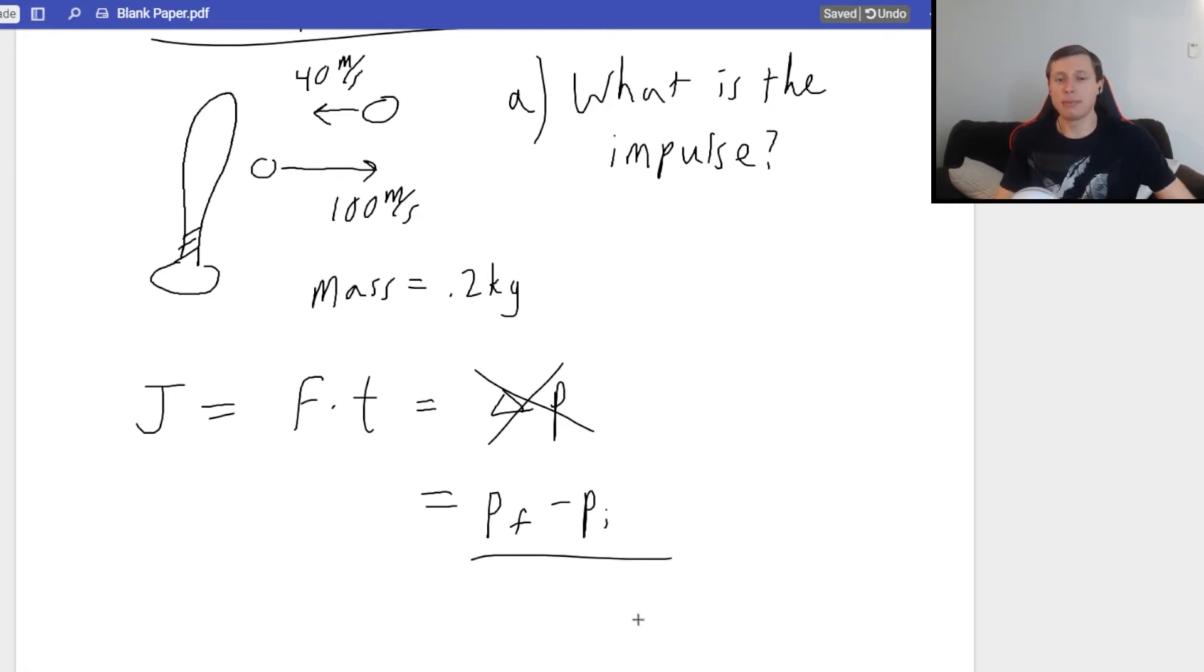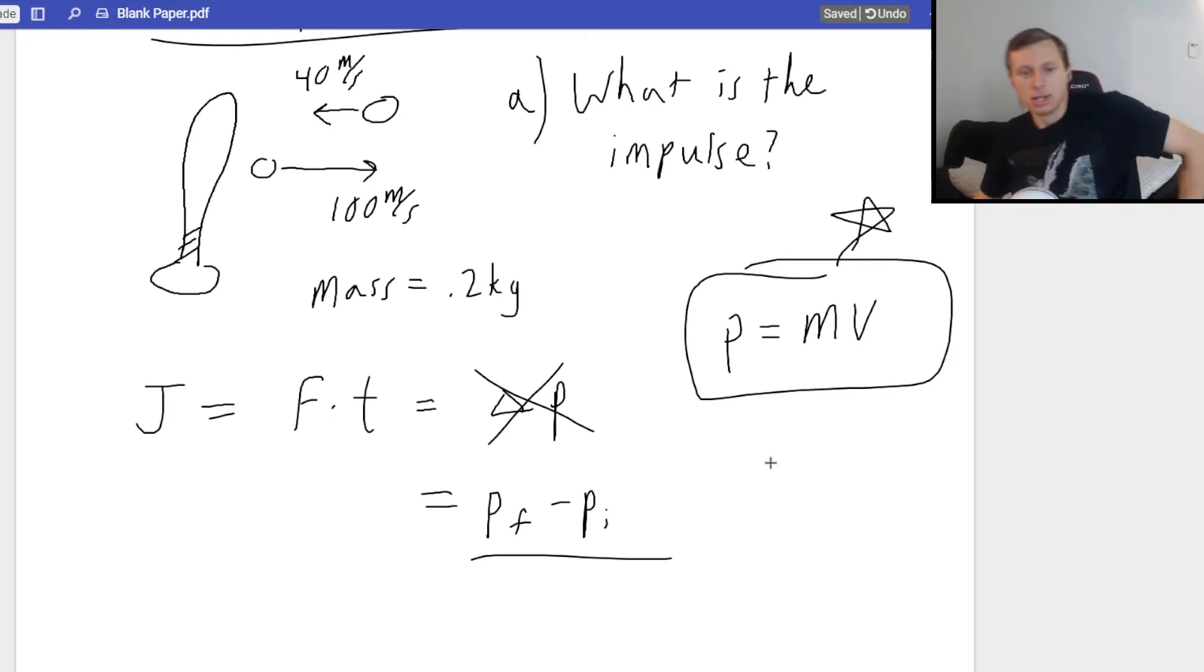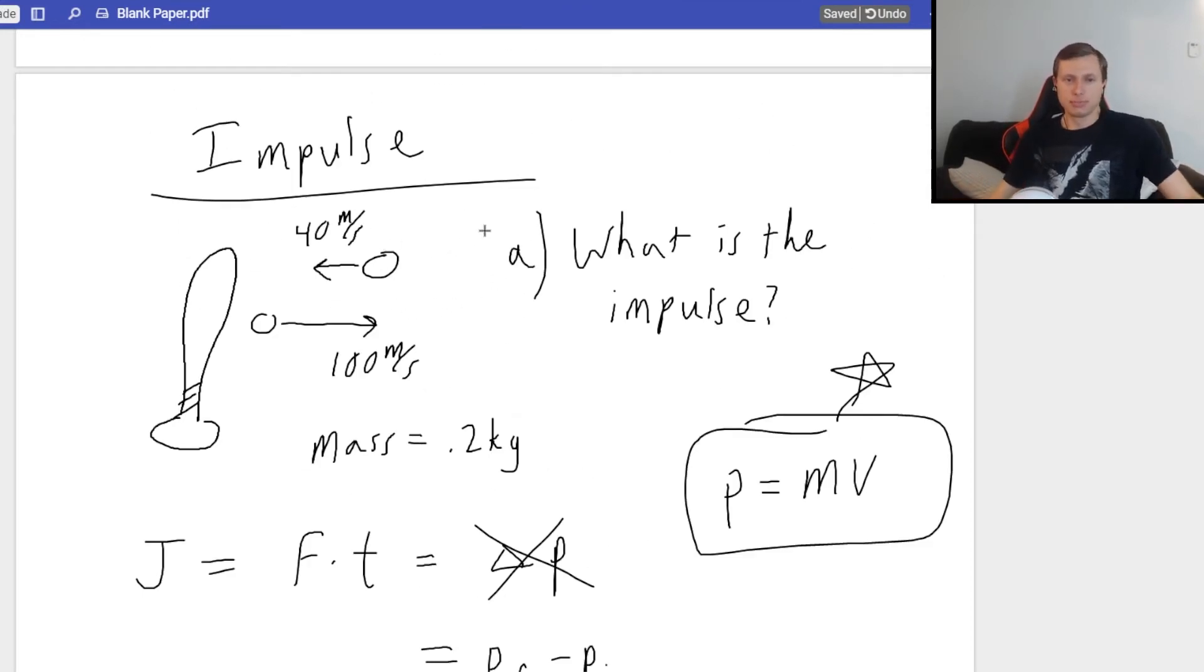We're going to be using P final minus P initial. Why? Because remember, P, momentum, what's that equation? MV. Remember that list of equations I'd recommend you memorize? This is absolutely one of them.